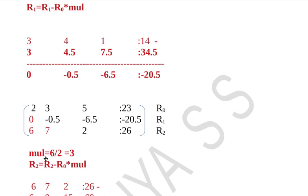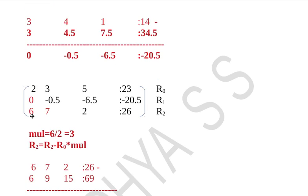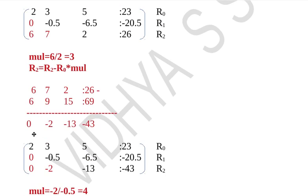Next, I need to make the first element of R2 equal to 0. The multiplier is 6 divided by the pivot element 2, giving 3. R2 is changed to R2 minus R0 times 3. R2 is [6, 7, 2, 26], and 3×R0 is [6, 9, 15, 69]. Subtracting, we get the new R2 as: 0, −2, −13, −43. Now both first-column elements below the pivot are 0.